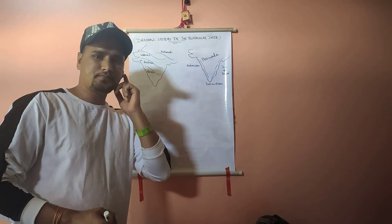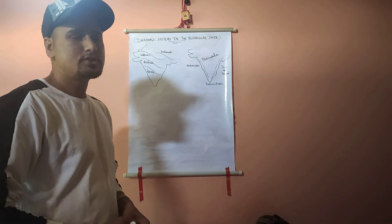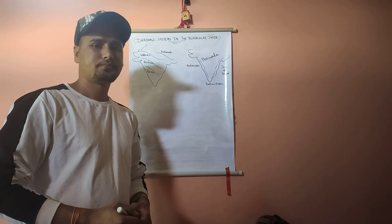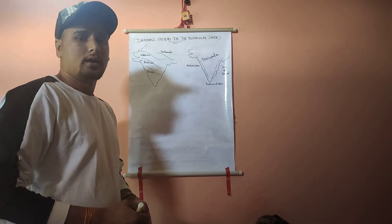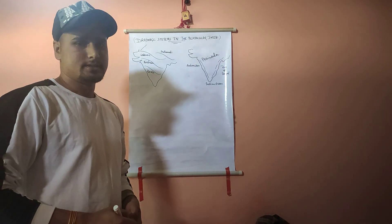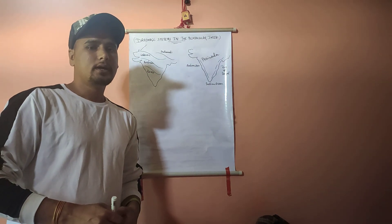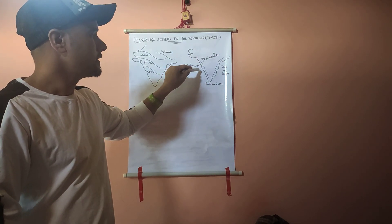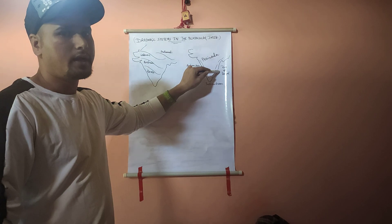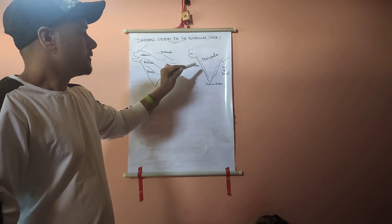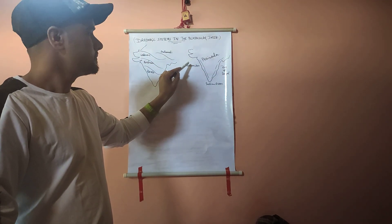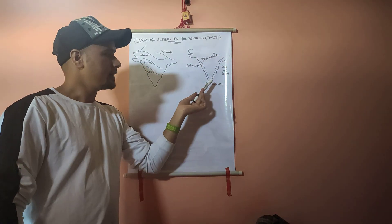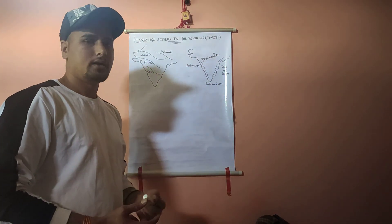Good morning everyone. Today's topic is the drainage system in Peninsular India — the river system of Peninsular India. Look here: this is the western coast of India and this is the eastern coast of India. The western coast has the Arabian Sea and the eastern coast has the Bay of Bengal, and to the south we have the Indian Ocean.